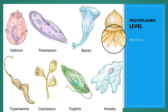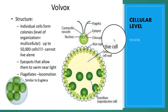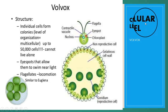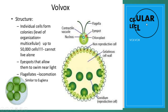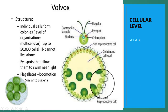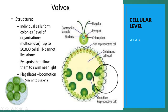The second level of organization is the cellular level. It comprises a loose association or aggregation of cells that are functionally differentiated. A division of labor exists so that some cells are concerned with reproduction and others with nutrition. Some protozoan forms like Volvox have distinct somatic and reproductive cells, placing them at the cellular level of organization.